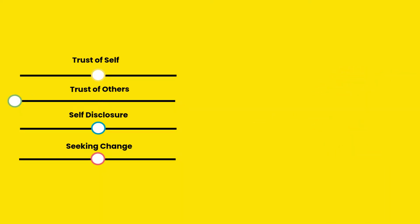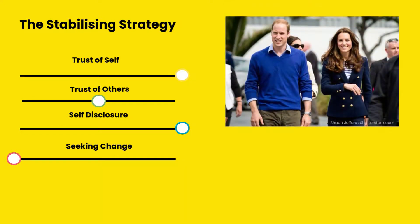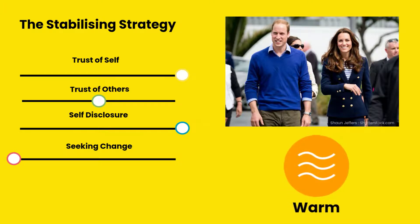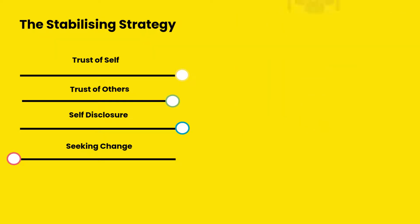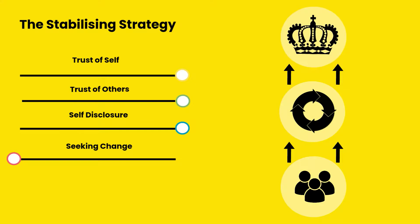If we apply this to the stabilizing strategy, we can contrast two different paragons of warm and cool stabilizing. The Duke and Duchess of Cambridge, William and Kate, exhibit a warm stabilizing influence. They have a high trust of others, which makes the public feel included in the process of evolving the role of the monarchy in modern Britain.